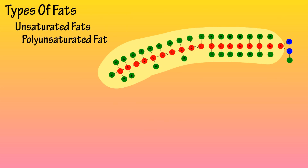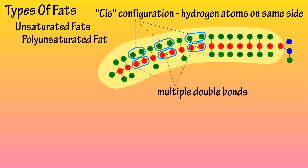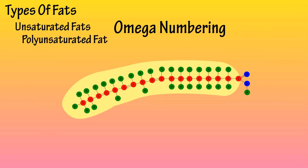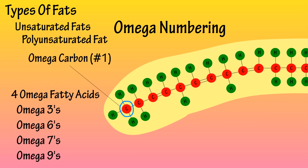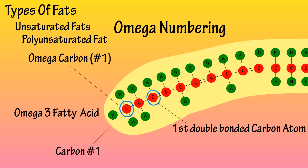The last type of fat on our list is polyunsaturated fat. It also has a cis molecular formation where the hydrogen atoms are on the same side, giving it a kinked formation. Polyunsaturated fats have more than one unsaturated carbon double bond in their molecule. They are typically liquid at room temperature but start to turn solid when chilled. Polyunsaturated fats are generally classified by their omega numbering. The omega carbon is the carbon atom at the end of the hydrocarbon chain. There are four types of omega fatty acids: 3, 6, 7, and 9, determined by where the first double bonded carbon atom is located. For example, an omega-3 fatty acid has its first double bond at carbon number 3.